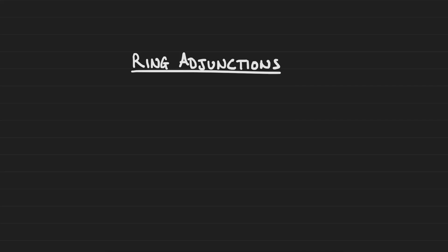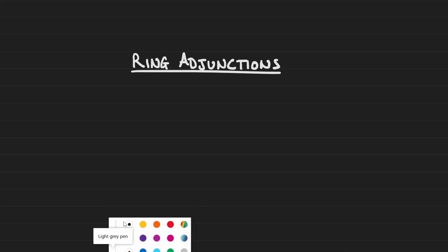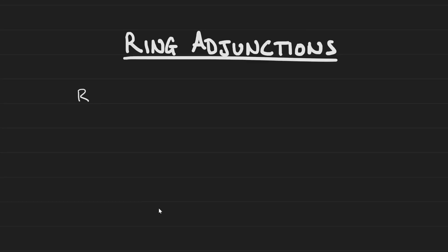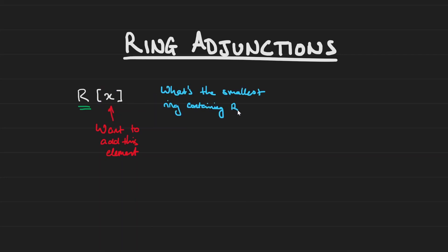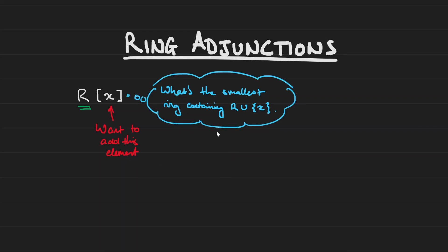We kind of already did this when we took a look at polynomials, because we started with a ring R and what we did was add in this element, this formal variable x. In a way, when you adjoin x, you're asking: what's the smallest ring containing the ring we already have along with this element x — R union x if you want. And really that smallest ring is indeed the polynomial ring.